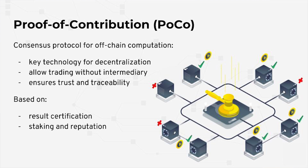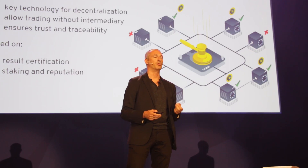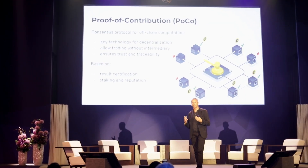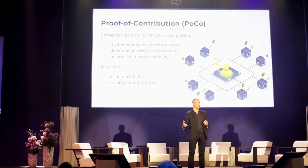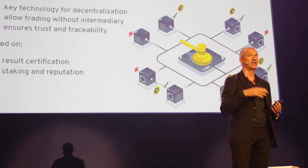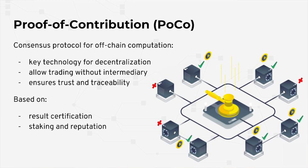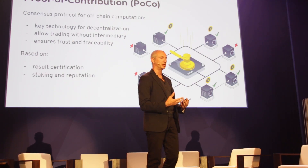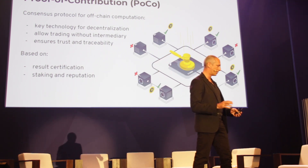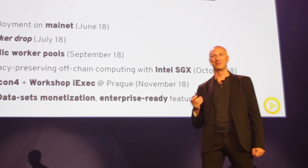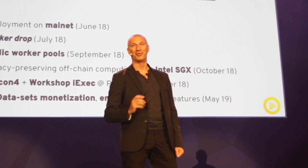Today we are also releasing the first version of the Proof of Contribution protocol — this is the technology that enables decentralization. What is Proof of Contribution? The issue is that you are provisioning a machine on the internet that you may not trust. How can you guarantee as a developer that the machine did what you asked for and what you paid for? We do result certification by majority voting — the traditional approach — plus staking, which means each actor must stake some RLC before doing the computation. We also use reputation. The algorithm is open source and already deployed on Ethereum. We allow trading computing power like a commodity, like the oil market.